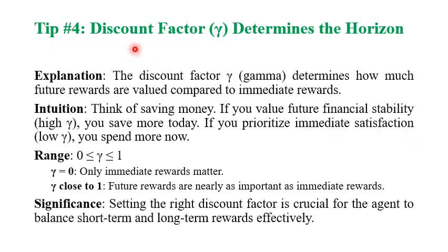The discount factor gamma determines how much future rewards are valued compared to immediate rewards. Think of saving money: if you value future financial stability, gamma is high and you save more today. If you prioritize immediate satisfaction, gamma is low and you spend more.